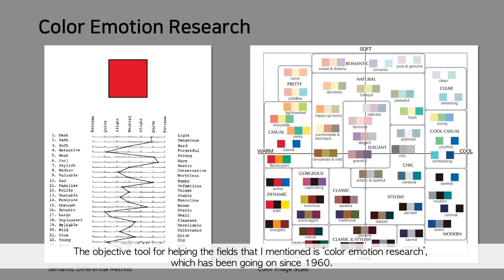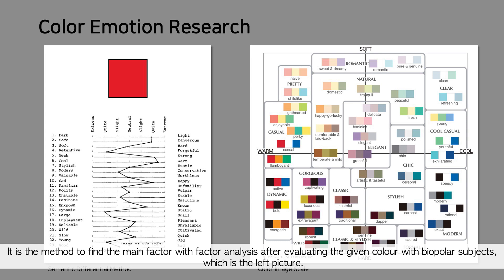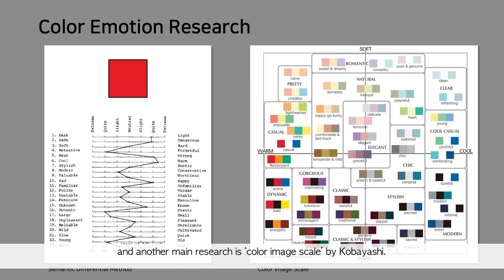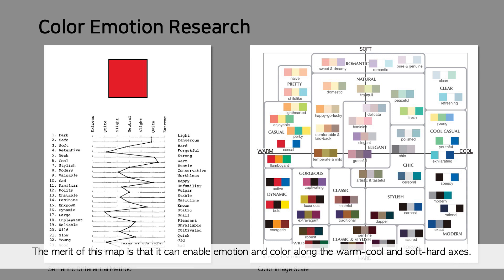The objective tool for helping these fields is color emotion research, which has been ongoing since 1960. A lot of methods have emerged, and the basis is the semantic differential method — a method to find the main factor with factor analysis after evaluating a given color with bipolar subjects, as shown in the left picture. Another main research is the color image scale by Kobayashi, who discovered the main factor using the SD method and completed a two-dimensional map using color projection technique. The merit of this map is that it can align emotion and color along the warm-cool and soft-hard axes.